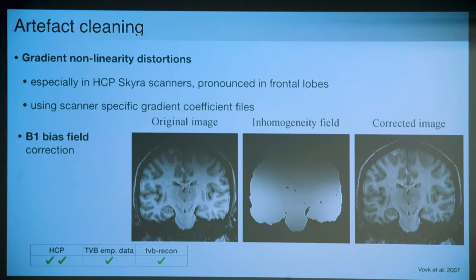B1 bias field correction is basically important for segmentation. If you apply a segmentation algorithm that tries to classify each voxel into gray matter, white matter, or cerebrospinal fluid, these intensities are very important. Otherwise these algorithms may fail.